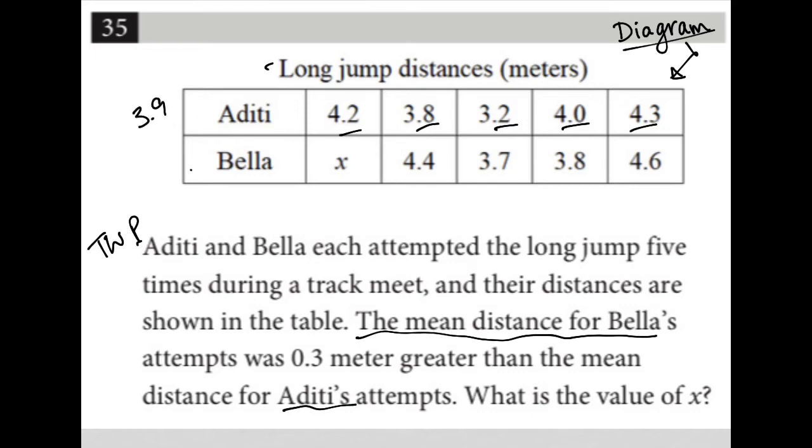Now we're told that Bella's is 0.3 greater, which means 3.9 plus 0.3 is 4.2. So Bella should be at 4.2. Now, again, I can now write down the fact that how do I find the mean for Bella? Well, Bella's mean, which I know is 4.2, is equal to the sum of all of these guys plus that, plus this x, right?